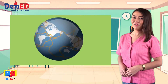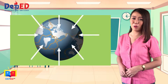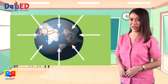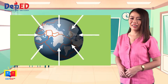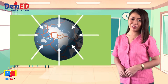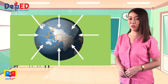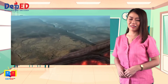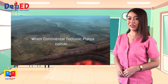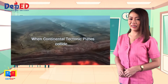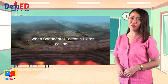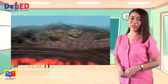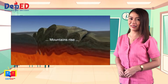Earth's surface is composed of tectonic plates that are constantly moving. The plates result in deformation of the Earth's crust. The different types of stress that act upon rocks play an important role in the movement of plates.